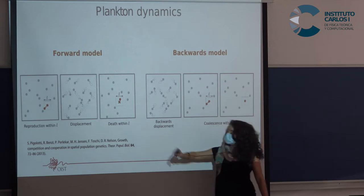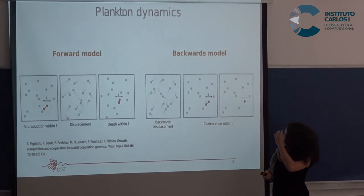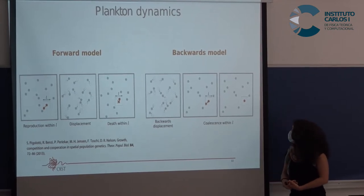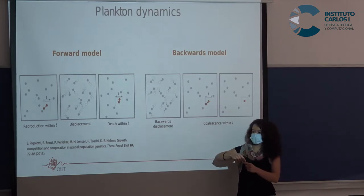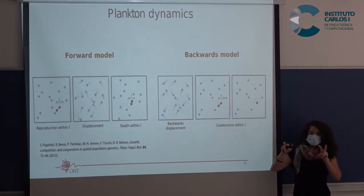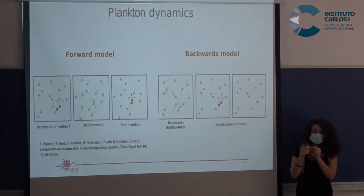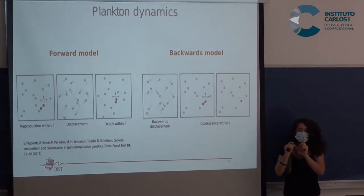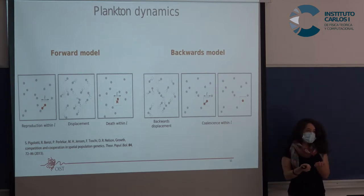The problem with the forward model is that you need to simulate the whole community, which is huge. To avoid this and achieve a more computationally optimal simulation, we use a backward model: starting from the sample and going backwards in time. Going backward, you have diffusion in reverse, and what we call coalescence — every time a particle enters the neighborhood of another, you establish that particle as the child of the one already there, save that relation, remove the particle, and repeat until only one particle remains as the common ancestor of everybody.